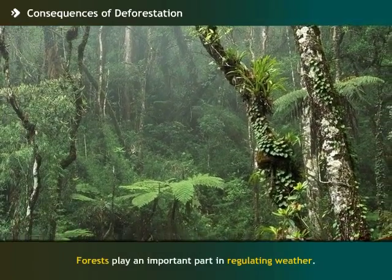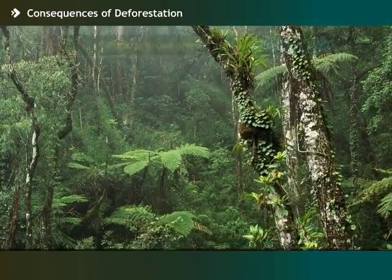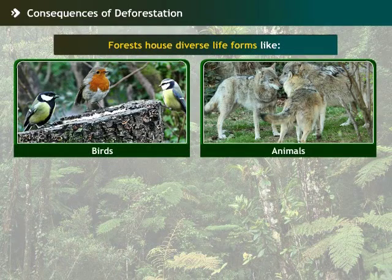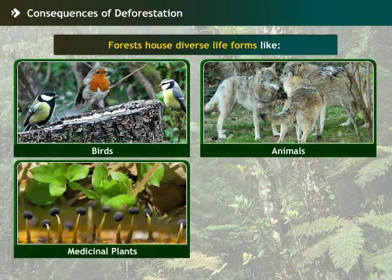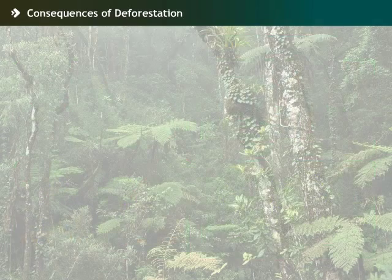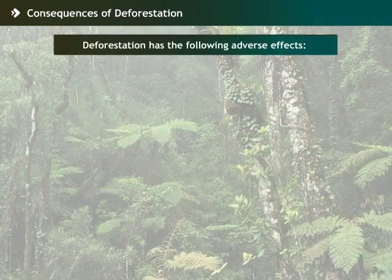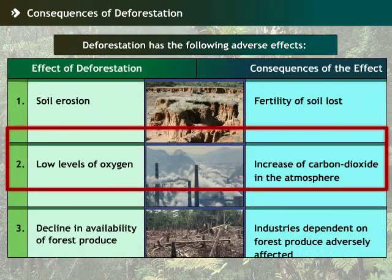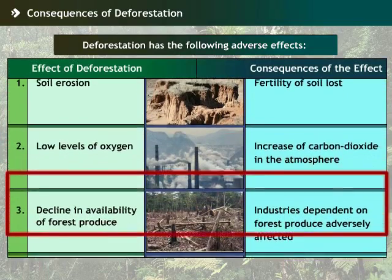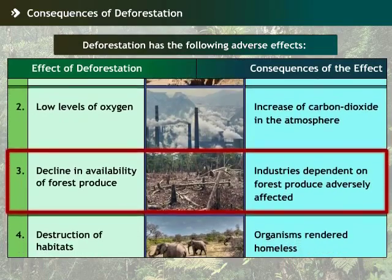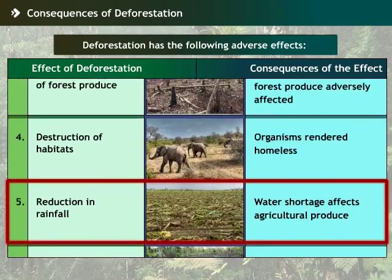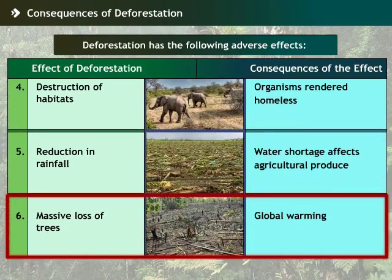Forests play an important part in regulating weather. They house diverse life forms like birds, animals, medicinal plants and crops. Deforestation has diverse effects in multiple ways. Deforestation results in soil erosion, decreased levels of oxygen, scarcity of forest produce, destruction of habitats, reduction in rainfall and global warming.